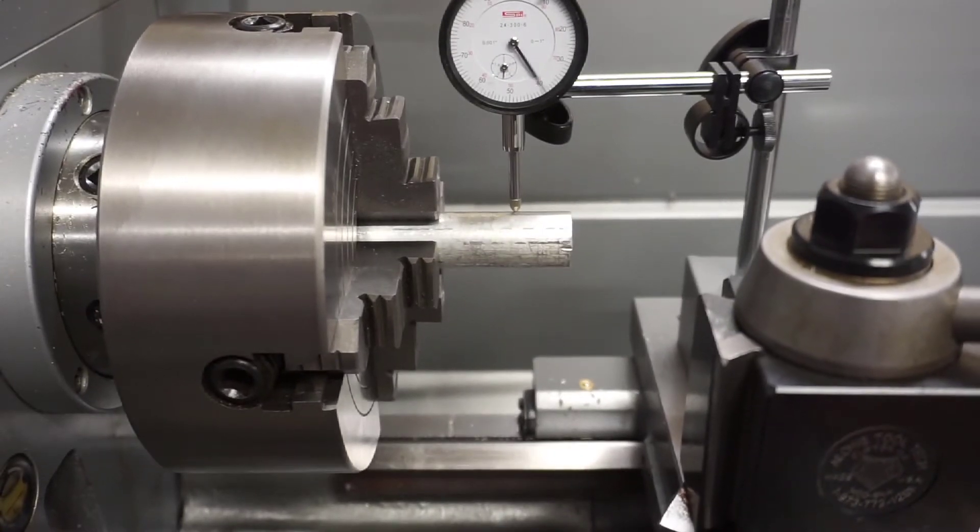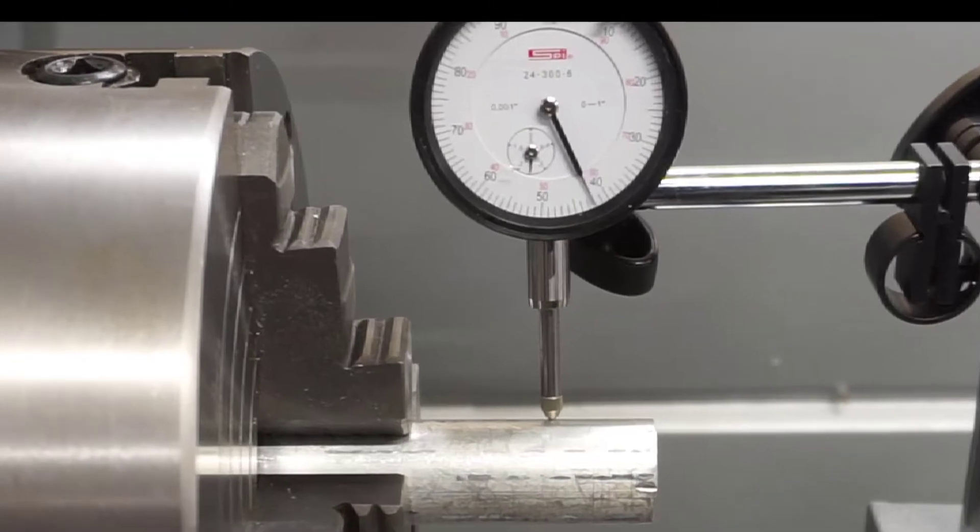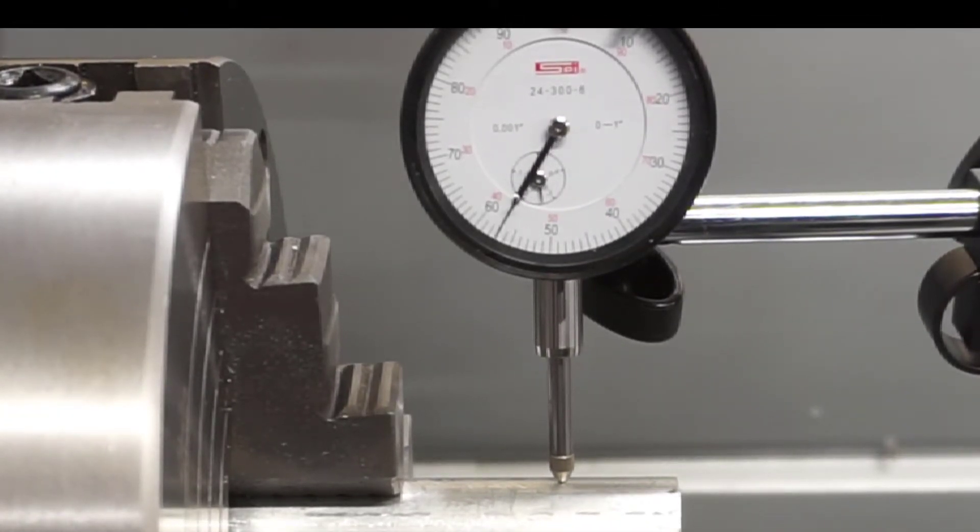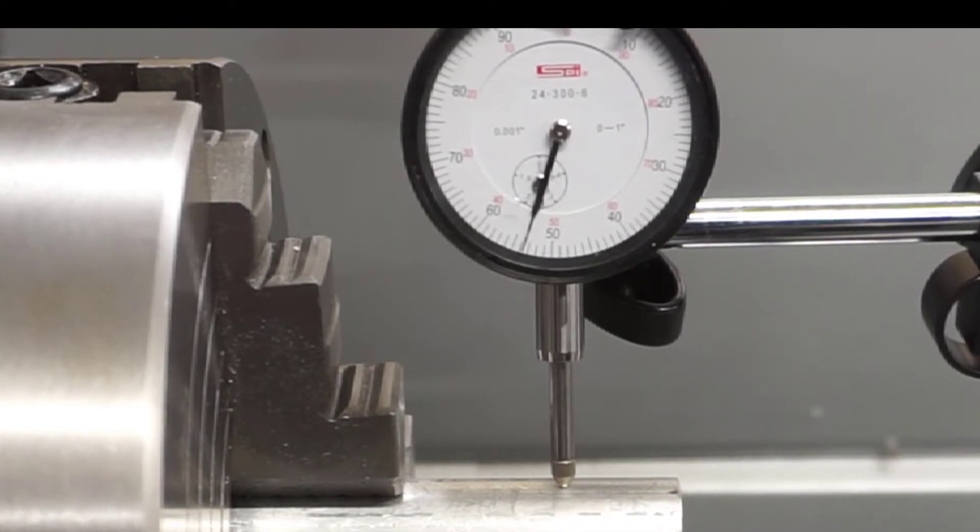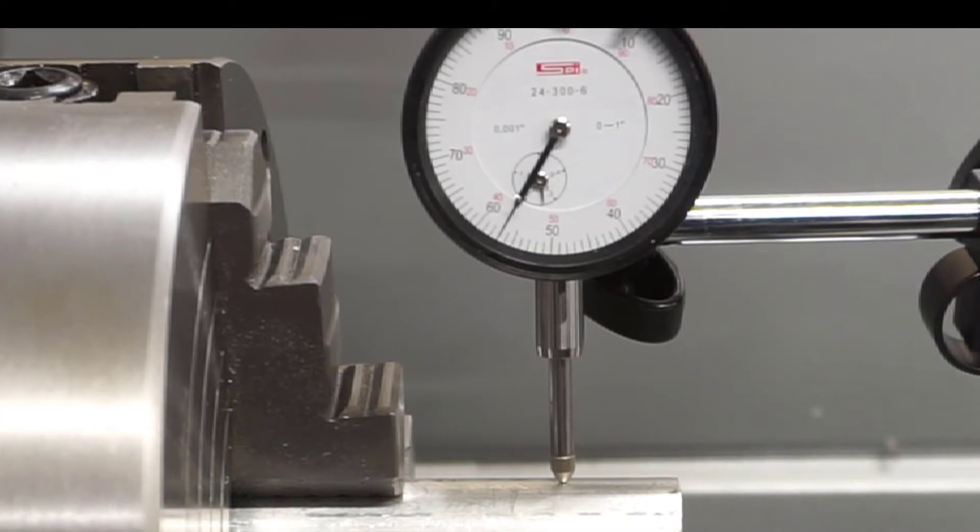We do that by moving the cross slide back and forth, and as the tip measurement is maximized for height, that's the top of the part. You'll see the top of the part indicated right there. We'll use that as our reference point to measure concentricity.